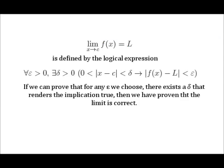The precise definition of the statement 'the limit as x approaches c of f of x is l' is: for all epsilon greater than 0, there exists a delta greater than 0, such that if the absolute value of x minus c is greater than 0 and less than delta, then the absolute value of f of x minus l is less than epsilon. The definition similarly applies to the statement: the limit as x approaches c of g of x is m.